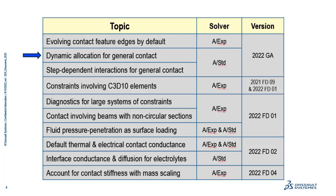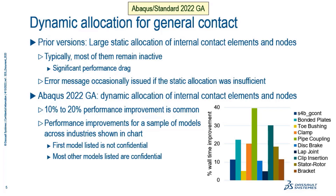The next topic is dynamic allocation for general contact. This is an Abacus Standard enhancement, first available in Abacus 2022 GA. The number of contact constraints that may become active over the course of a simulation is really unpredictable. In the past, the architecture would make an upper bound estimate of how many contact constraints would become active. Typically most would remain inactive, causing a significant performance drag. Occasionally our upper bound estimate was insufficient and an error message would be issued. In Abacus 2022 GA we added a major enhancement to do dynamic allocation of internal contact elements and internal nodes associated with those contact constraints.